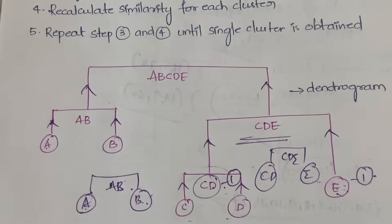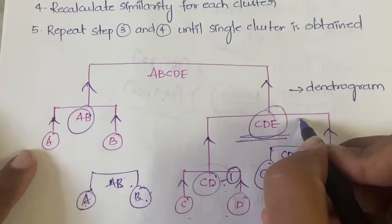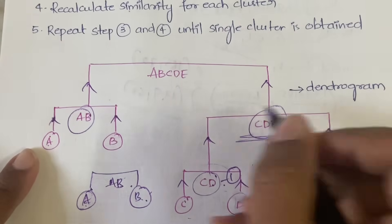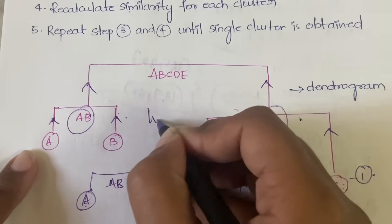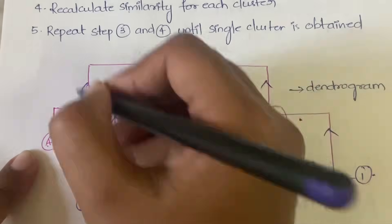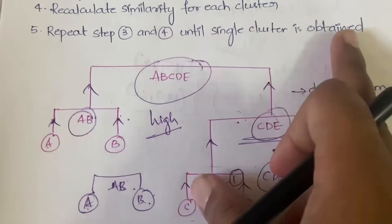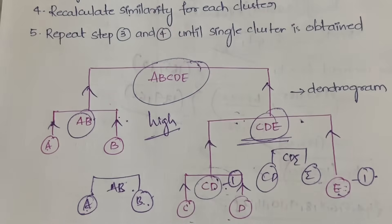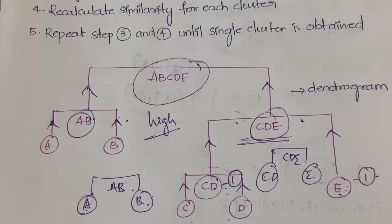Continuing upward: AB is one cluster and CD is one cluster. You calculate the similarity between AB and CD, and if it is high again you merge them into one big cluster. You keep repeating this process until you get one single cluster. That is the agglomerative method.